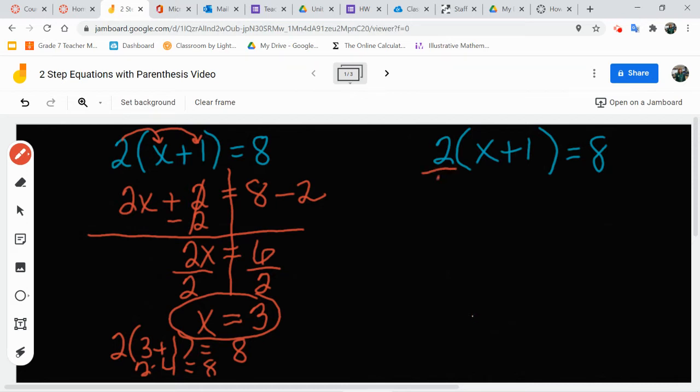So I'm going to divide both sides first by the number in front of the parentheses. When I do that, I can take off my parentheses, and I'm left with one group of x plus 1 equals 8 divided by 2 is 4. Then I just have one step left to solve to get the variable isolated or by itself.